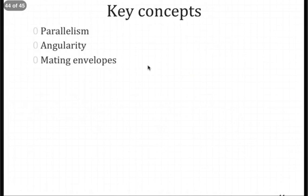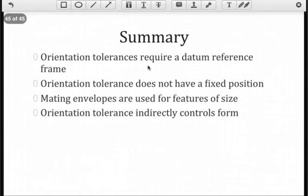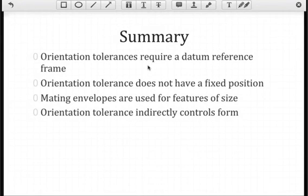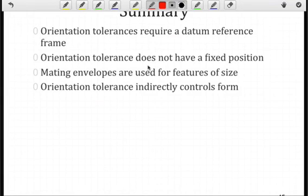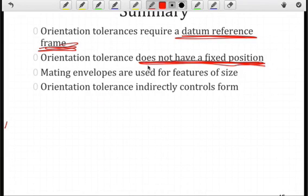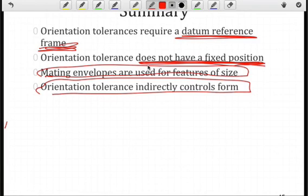At this point, you should understand the concepts of orientation, including perpendicularity, parallelism, and angularity, and also how mating envelopes are used in determining the orientation of the feature and when we're using material condition to determine the deviation from material condition. Orientation tolerance zones always need a datum reference frame — if there isn't one, you need clarification as to the designer's intent. Note we are not constraining the position of the feature we're trying to control. Mating envelopes are used for features of size, and orientation tolerance will definitely affect the shape, because if we're controlling orientation we're also constraining the shape indirectly.